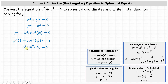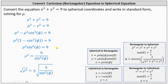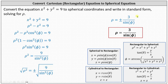Next, we'll divide both sides by sine squared phi, and now we'll take the square root of both sides of the equation. Algebraically, we do have a plus or minus on the right, which gives us rho equals plus or minus three divided by sine phi. Let's use the positive value and say rho equals three divided by sine phi.